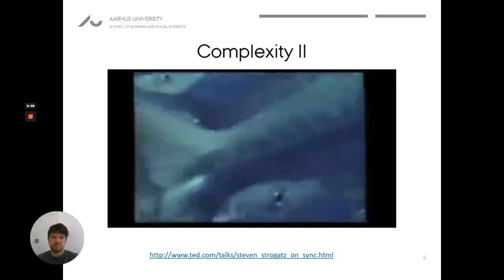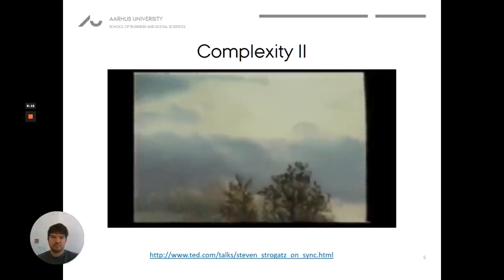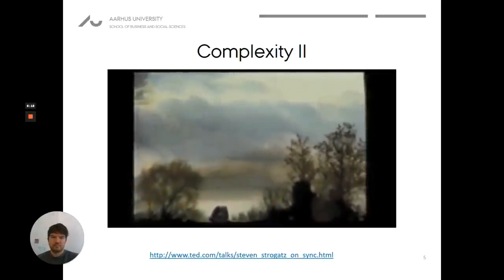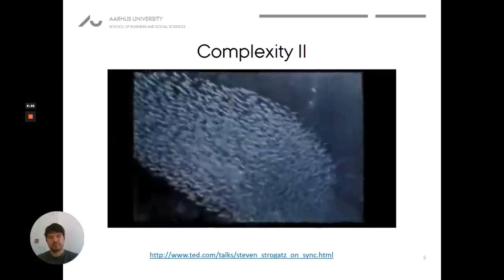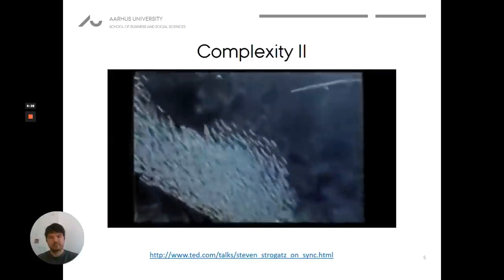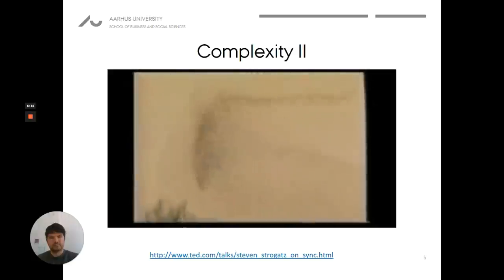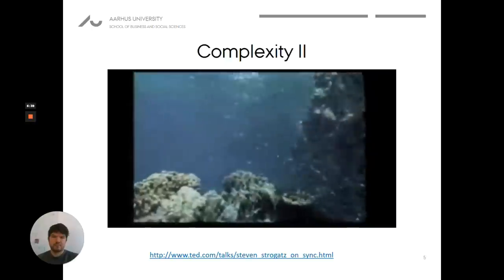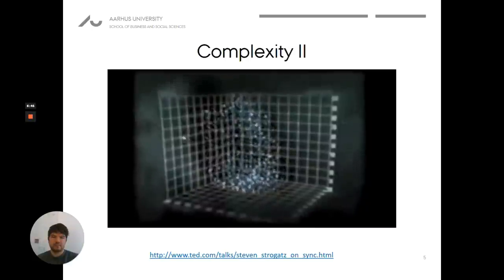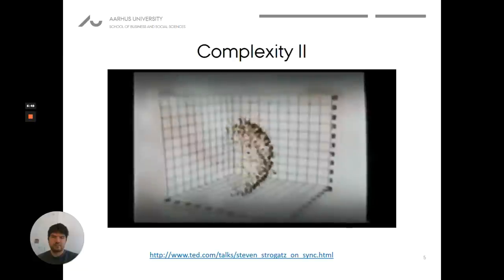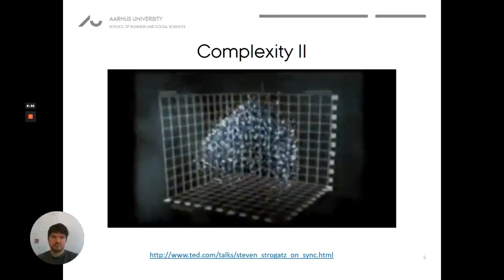Fish like to stay close together, about a body length apart. Birds try to stay about three or four body lengths apart. Now all this changes when a predator enters the scene. There's a fourth rule: when a predator is coming, get out of the way. The prey move out in random directions and then the rule of attraction brings them back together. There's this constant splitting and reforming.